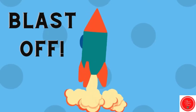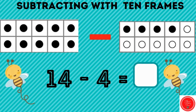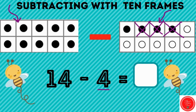Good job. Now let's get into subtracting with 10 frames. So here we have the problem: 14 minus 4. Here I have 10, and here I have 4. That gives us 14. So how many do I have to take away? 4. Good. So if I cross out these 4. We always want to start taking away with the 10 frame that's not complete — that just makes it easier. Now we're left with this 10 frame, and I already know that this is 10, so I don't have to spend time counting 1, 2, 3. I can just say 10. So 14 minus 4 equals 10.